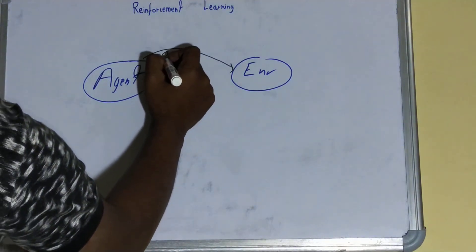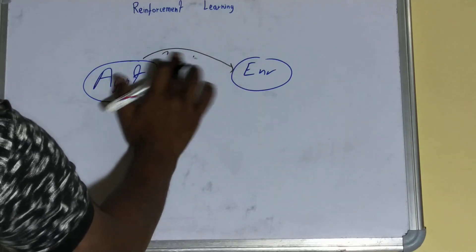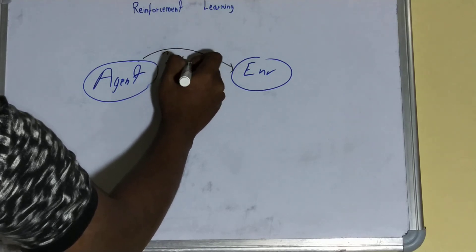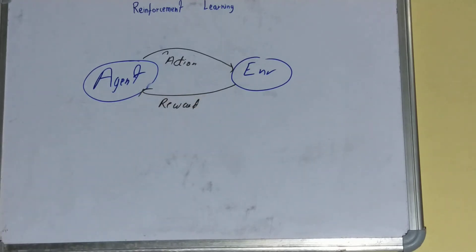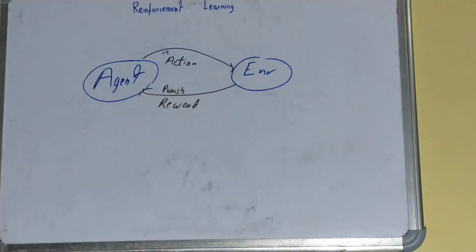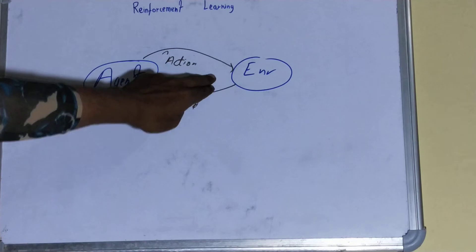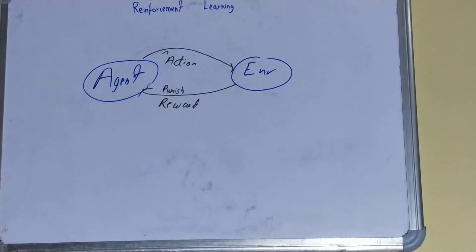If that action is right, we'll reward it, and if that action is wrong, we'll punish it in some way. This is how we'll teach that particular agent or machine learning algorithm what is the optimal action the agent should take in that particular environment to get a reward. So the ultimate goal is to teach or make that agent understand what is the right thing to do.